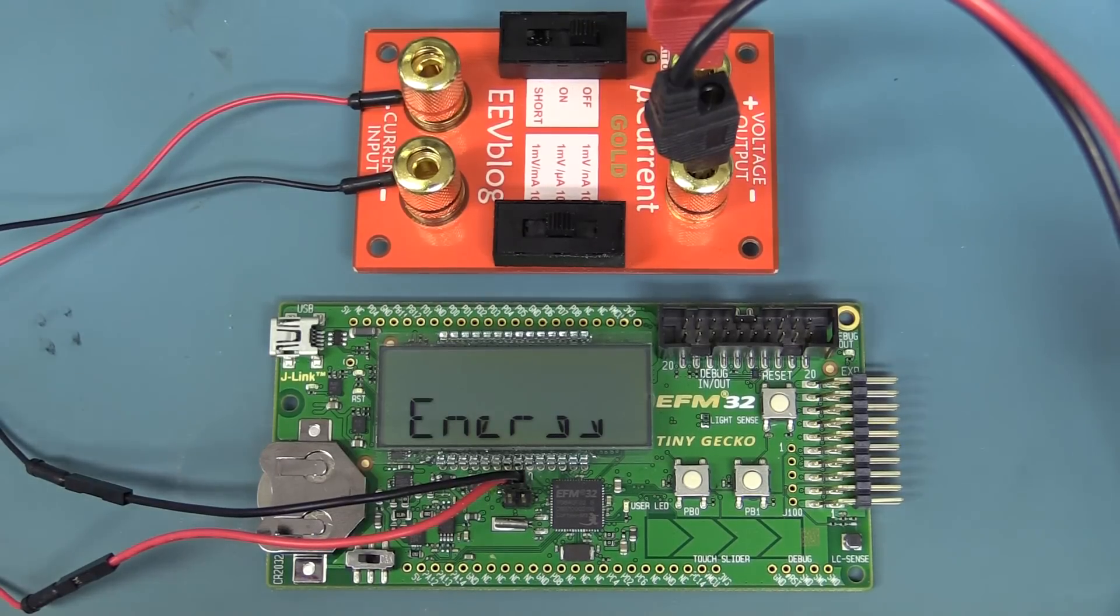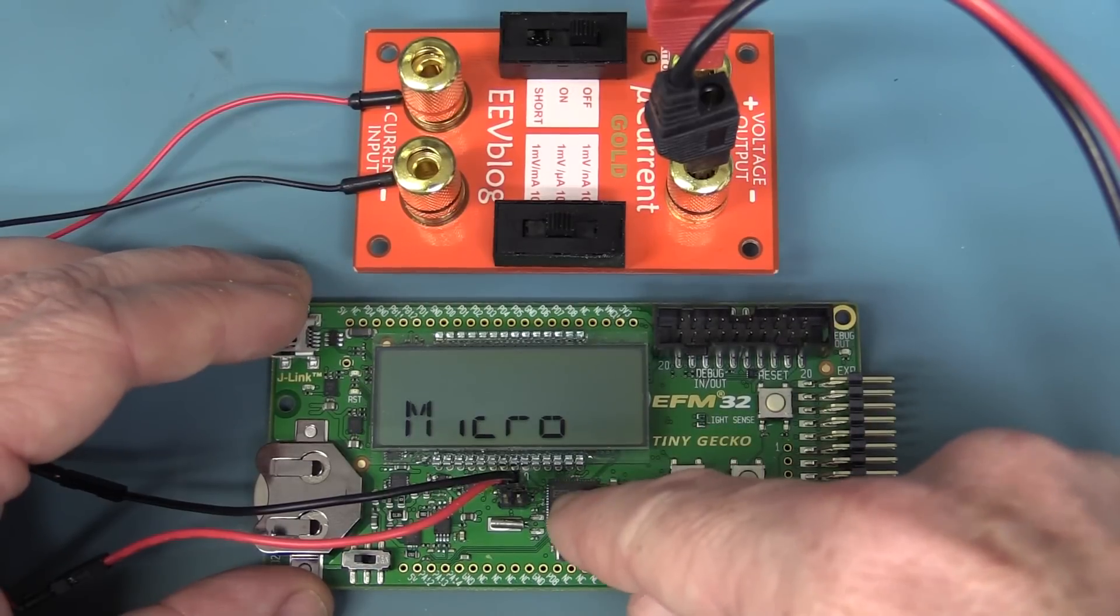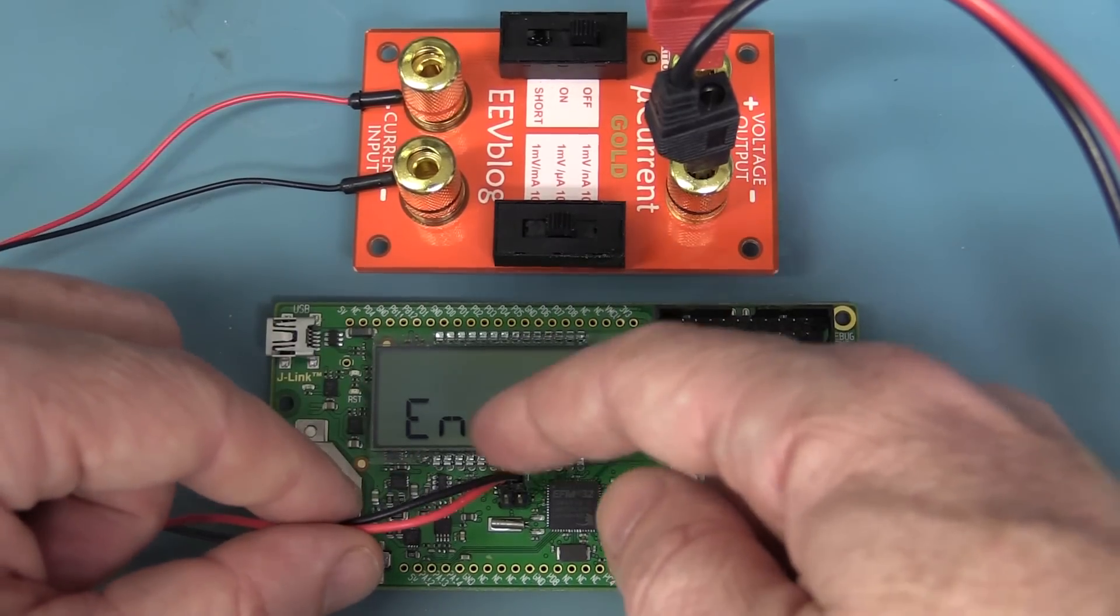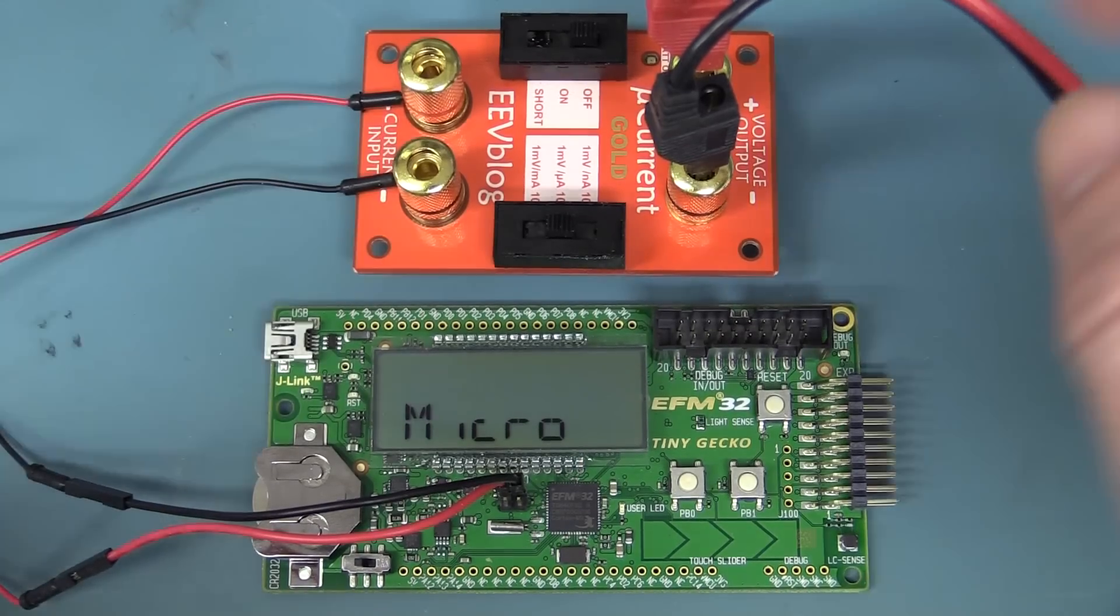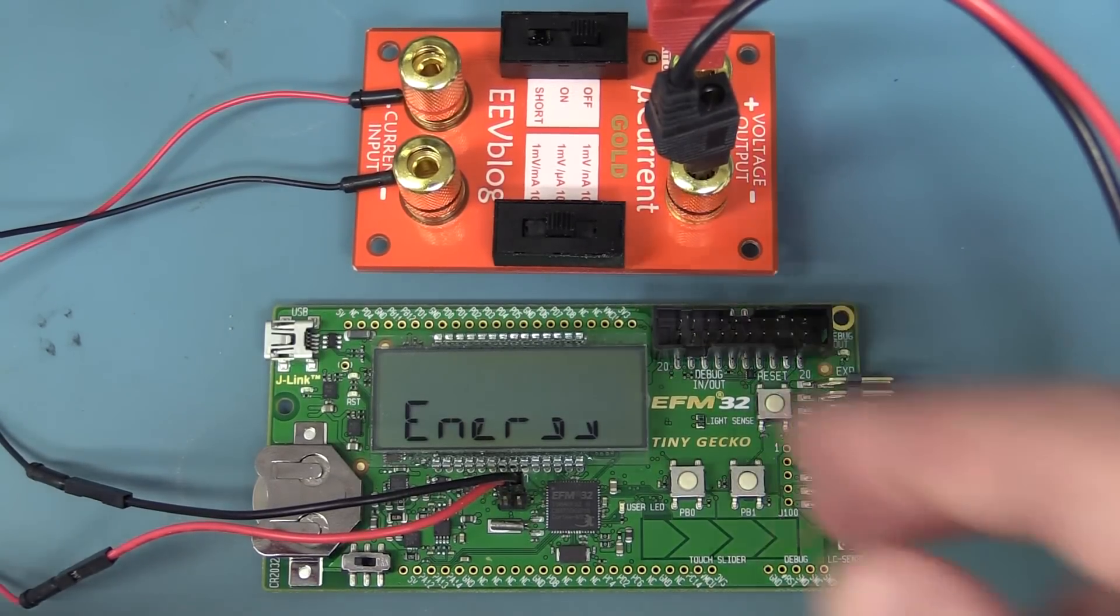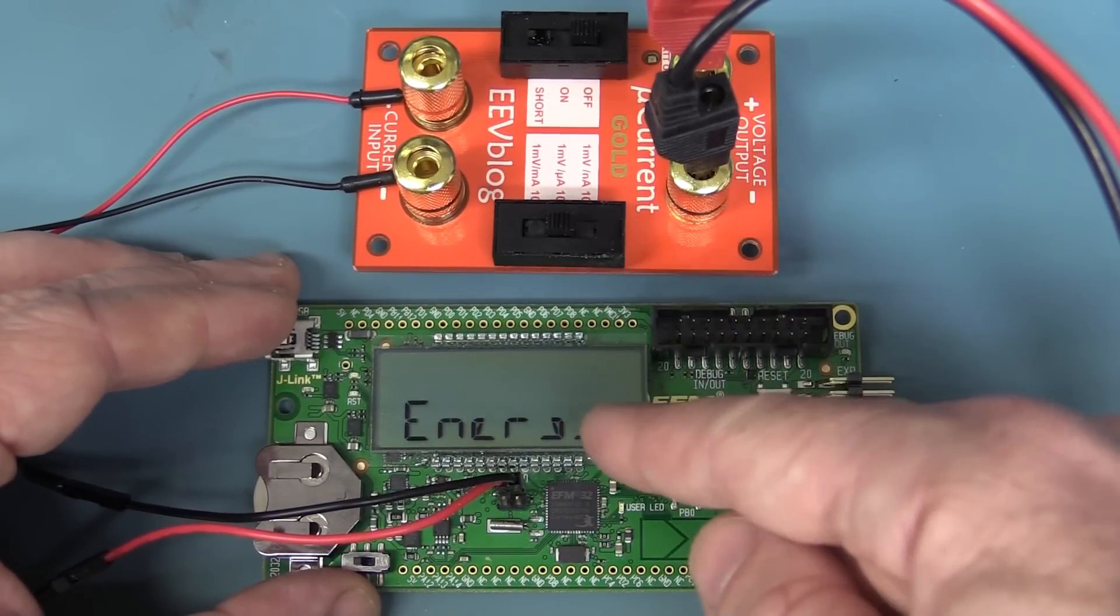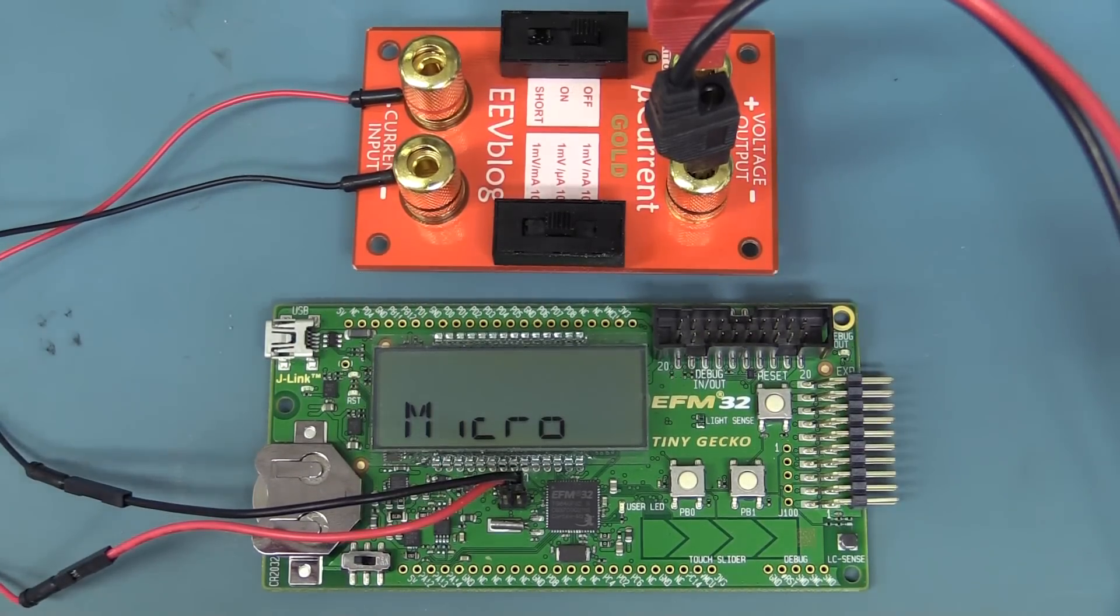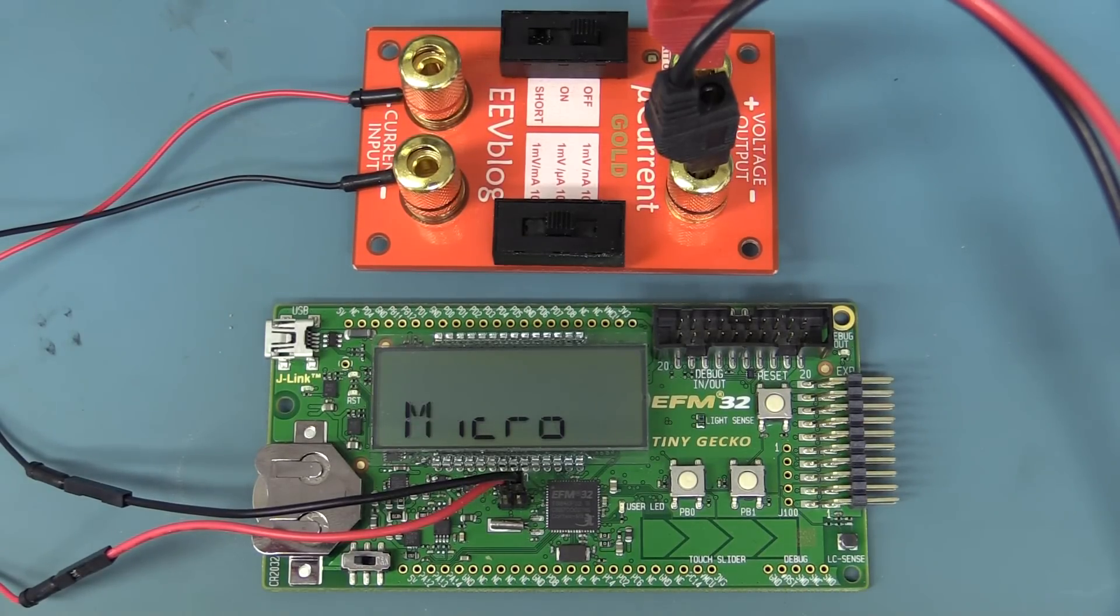Now, a really good example of where integrals will come in handy is, for example, measuring the power consumption of a modern microcontroller like this Energy Micro ARM micro we have here. Now, I'm using my microcurrent here, and I've got it in series, a couple of jumpers in there, in series with the power supply of the microcontroller. I've set the range so that we're able to measure this on our multimeter, but in this case we're going to take it out to the oscilloscope and actually look at the waveform. And the microcontroller is actually going to sleep here, and then every second it's waking up, and then changing the message on the LCD there. So we need to measure the total power consumption of this microcontroller. Let's see how integrals and the integral function helps us do this.